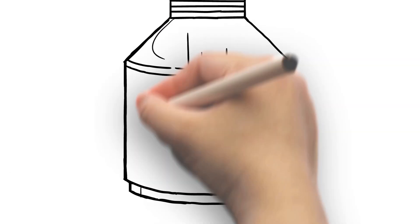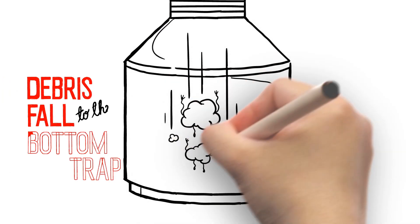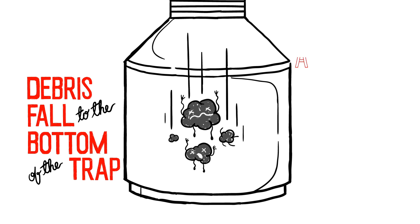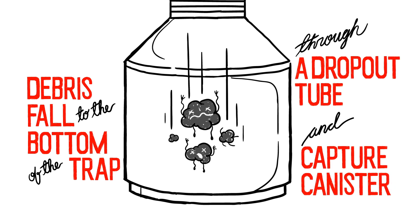For applications with heavier debris, bigger pieces can fall to the bottom of the trap. For this reason, U.S. Duck offers an optional dropout tube and capture canister.